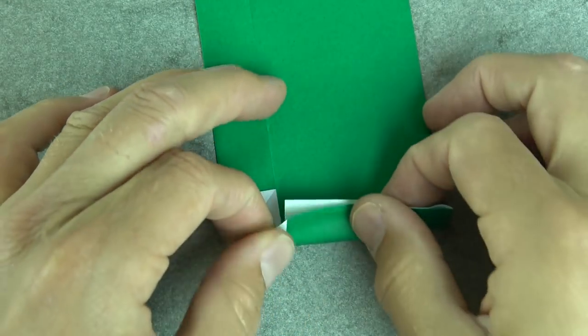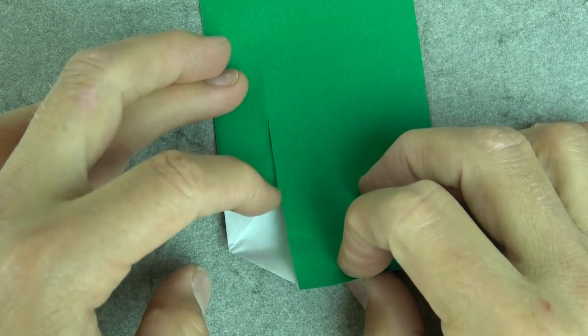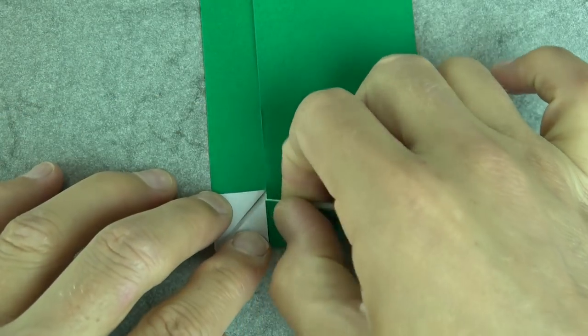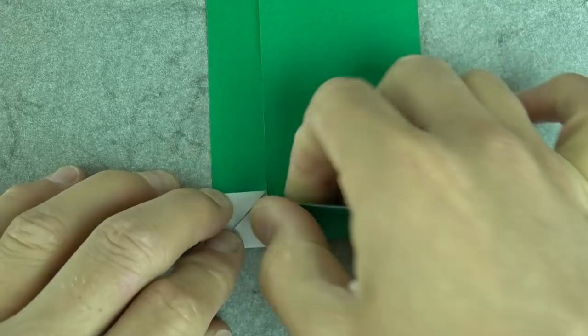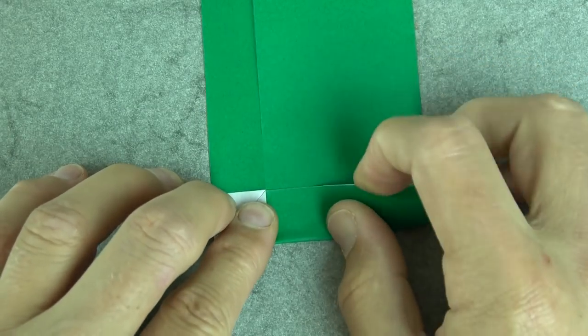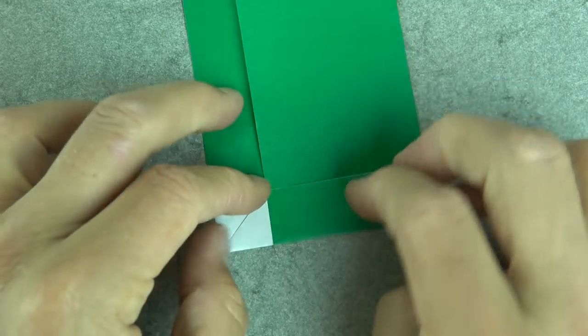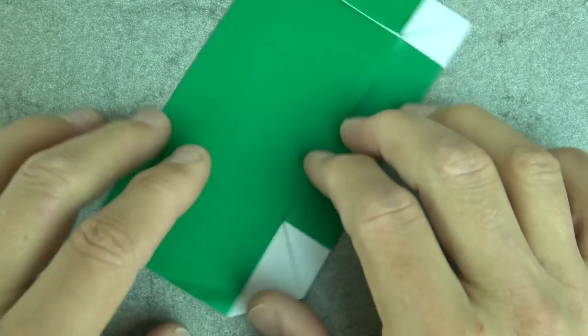Now fold this edge out so that this edge aligns with this edge. Try to keep the layers together so that they don't slide. And repeat on this side.